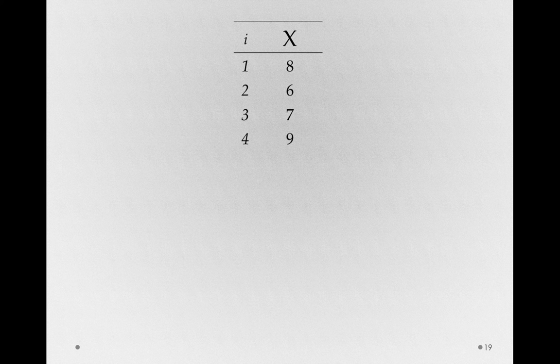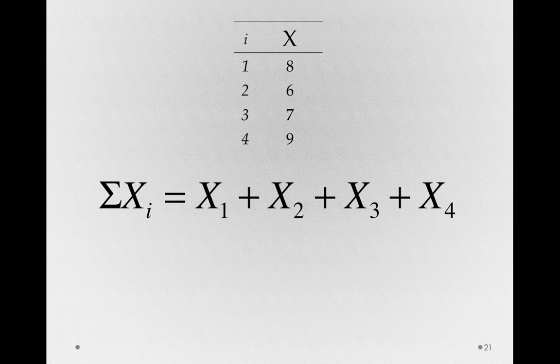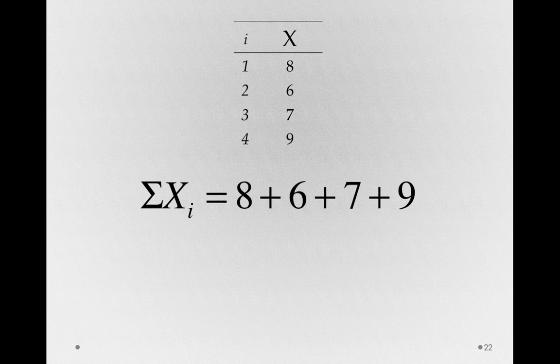All right, so let's use that i notation, because this is how we'll actually see formulas. The sum of the x i's. Now, this actually writes out to be sum of the x1, which is the first index of the x variable, x2, x3, and x4. And so, again, we're given 8 plus 6 plus 7 plus 9, or 30.